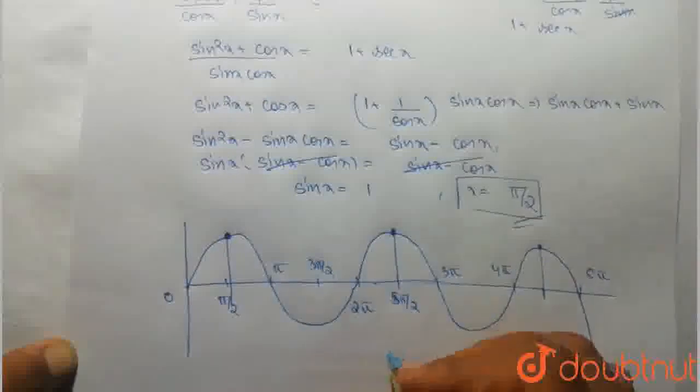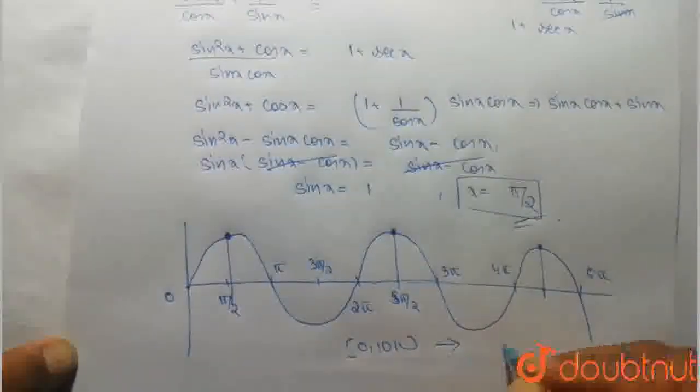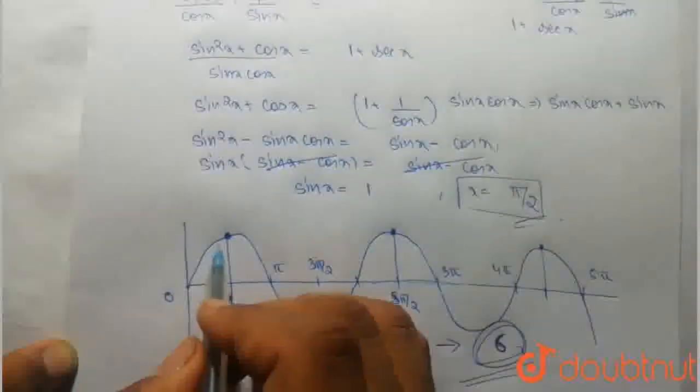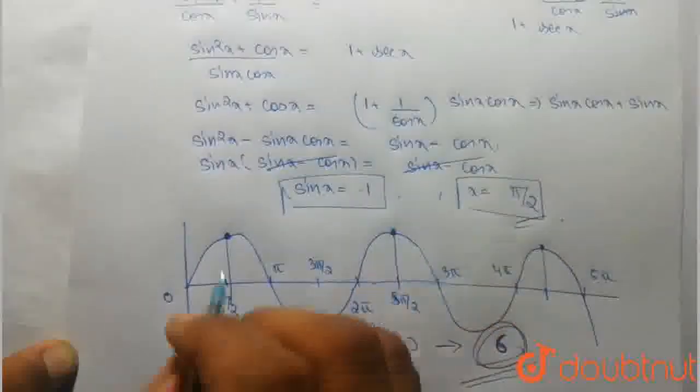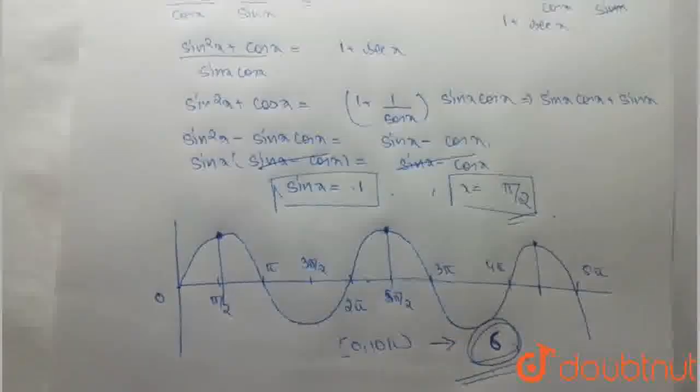Just double of it because it will be the same curve, this will continue. So between 0 to 10π, how much value? There will be 6 values of x for which we get sin x is equal to 1. Therefore, how much solution will be? 6. 6 is the correct answer. Thank you.